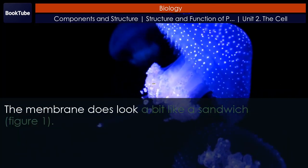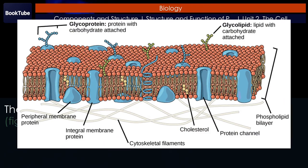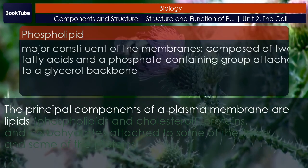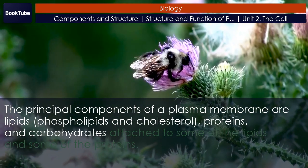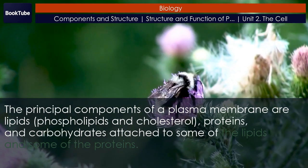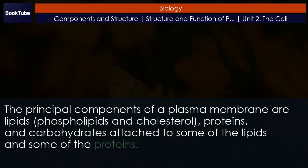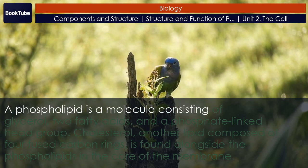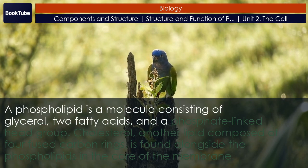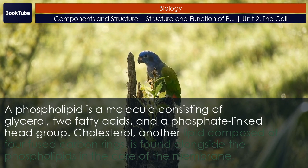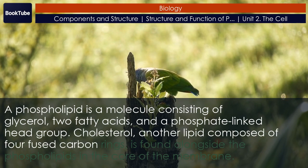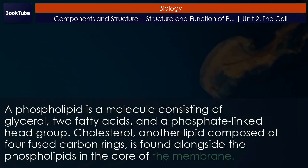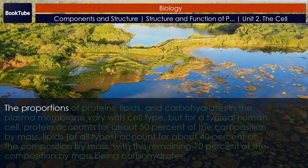The membrane does look a bit like a sandwich. The principal components of a plasma membrane are lipids—phospholipids and cholesterol—proteins, and carbohydrates attached to some of the lipids and some of the proteins. A phospholipid is a molecule consisting of glycerol, two fatty acids, and a phosphate-linked head group. Cholesterol, another lipid composed of four fused carbon rings, is found alongside the phospholipids in the core of the membrane.